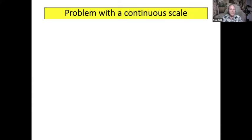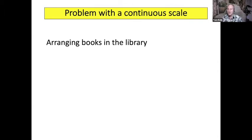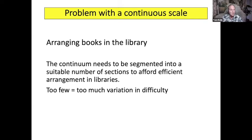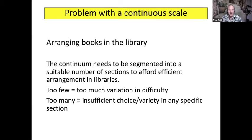One problem with the Yomi Yasusa level and the Lexile levels is that they are continuous scales. How do you arrange books in a library? You aren't going to arrange them from 0.1 to 0.2 or 0.3 — you'd have 100 different sections in your shelving. The continuum needs to be segmented into a suitable number of sections for efficient arrangement in libraries. If there are too few sections, there's too much variation. If there are too many, there's insufficient choice and not much variety.